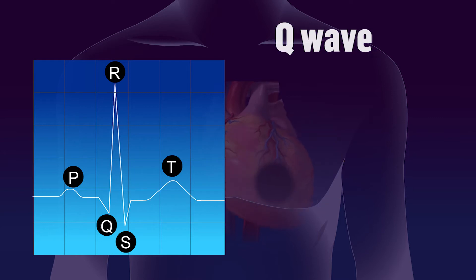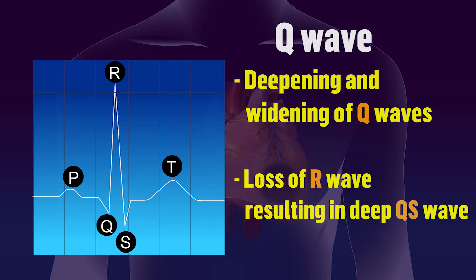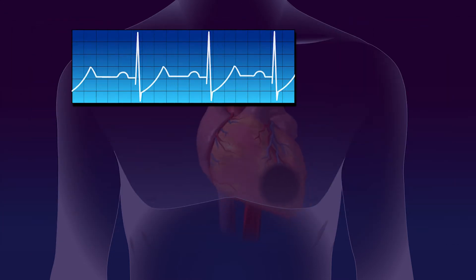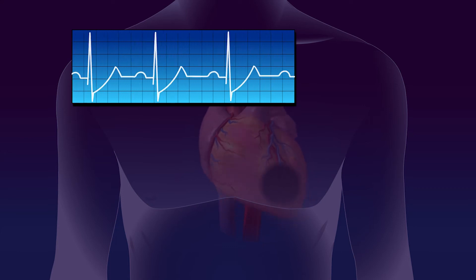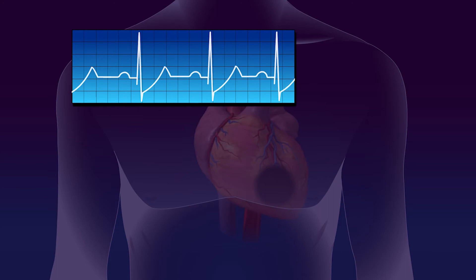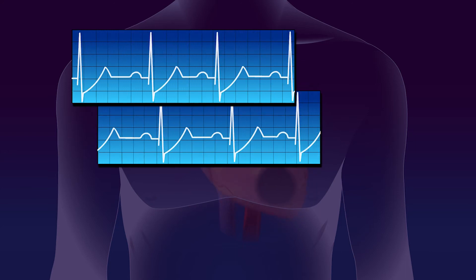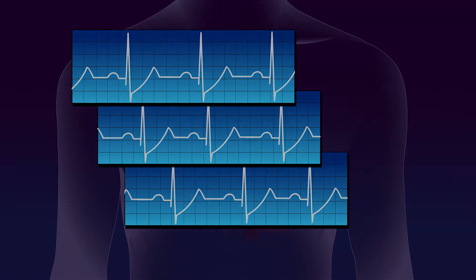Q wave changes lead to deepening and widening of Q waves, with loss of R wave resulting in deep Q waves. These ischemic changes are indicative of myocardial damage. They can occur alone or more commonly in combination with one another to produce a variety of patterns.